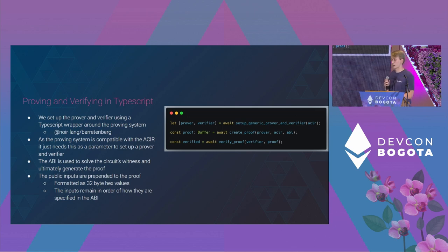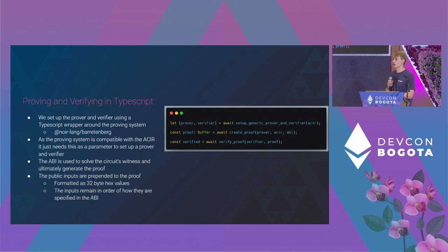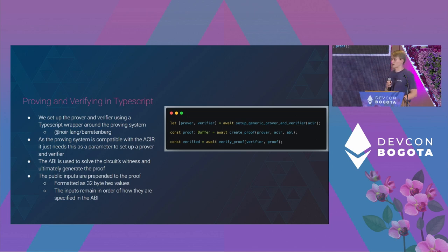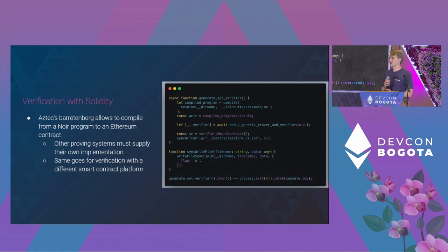To set up the prover and verifier, we simply pass in the ACIR, then use that ABI to construct our proof, and pass it along to the verifier. One thing to note is that you don't see public inputs being passed to the verifier explicitly — currently the proof output from Barrettenberg pre-pends those as 32-byte hex string inputs. We plan to separate that, as developers may want those inputs separated for their own purposes.